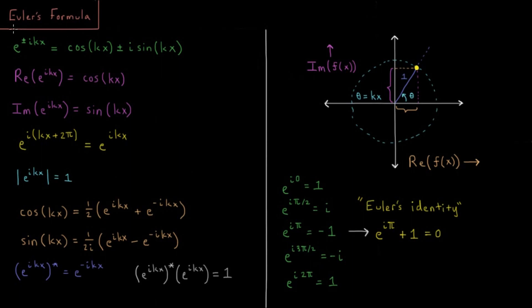So that's Euler's formula. Complex exponentials are periodic, they have a magnitude of 1, them multiplied by their complex conjugates gives you 1, and they are expressing these complex exponentials in terms of their real part, cosines, and their imaginary part, sines.